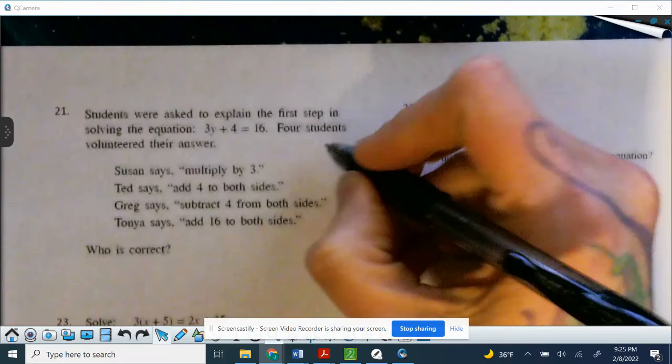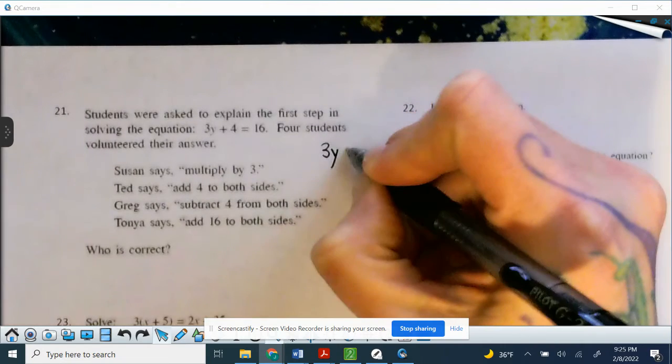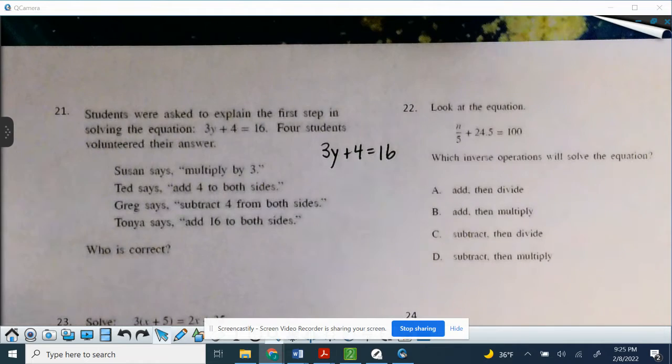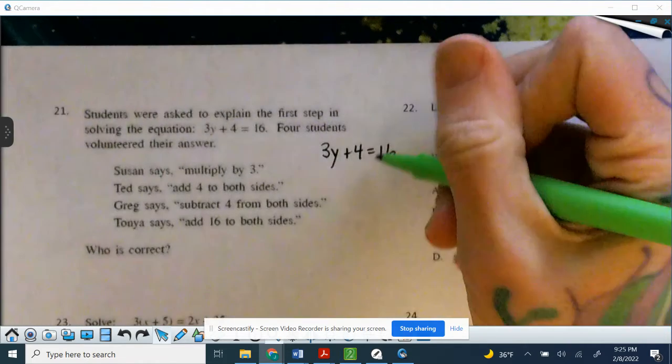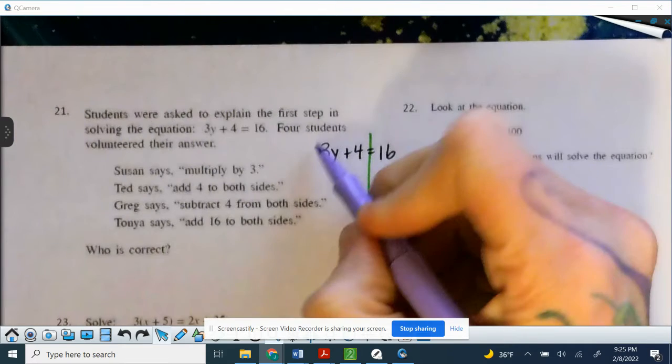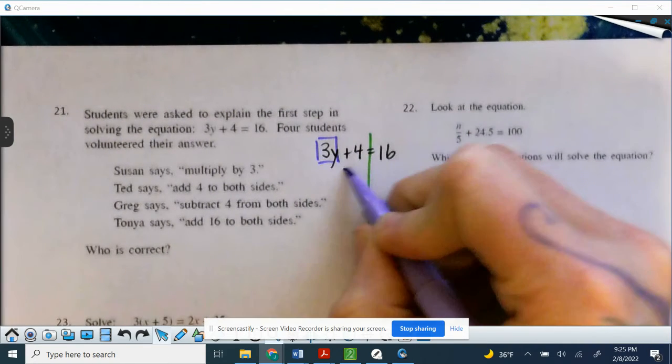Now, what I would tell you to do is probably, unless you already know and then of course pick your answer, but for those of us who struggle a little bit with all these words, take that equation and let's solve it. So I know that I need 3y by itself, so I'm going to subtract 4 from both sides.